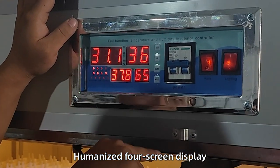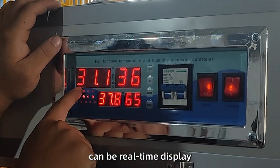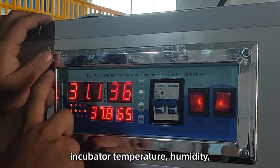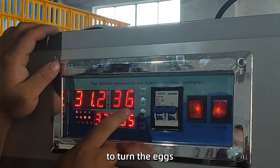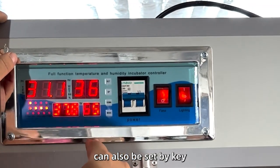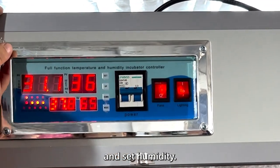Humanized four-screen display design allows two screens to display real-time incubator temperature and humidity, while the other two screens can be set to display the number of times to turn eggs and days of incubation, or alternatively display the set temperature and set humidity.